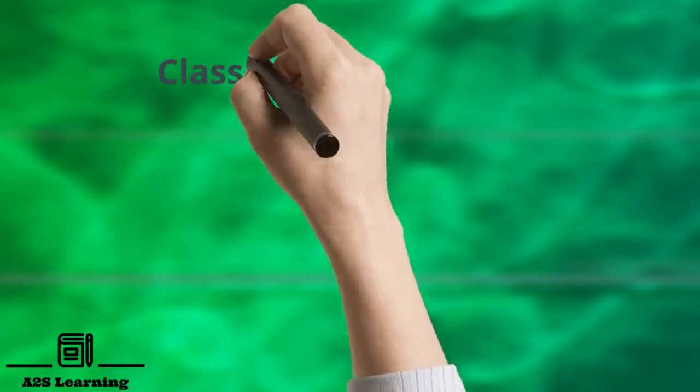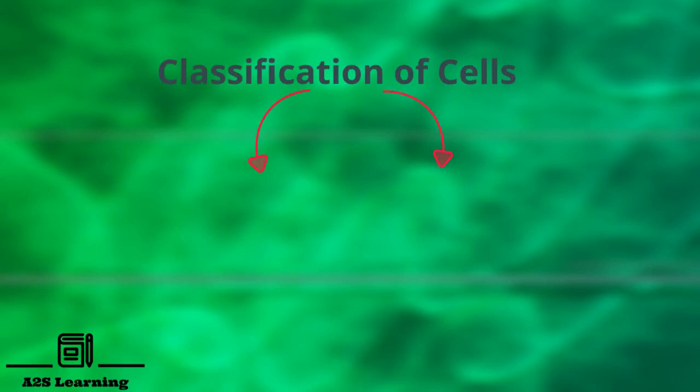Classification of cell: Based on the presence of nucleus, cells are classified into two types, prokaryotic cell and eukaryotic cell.